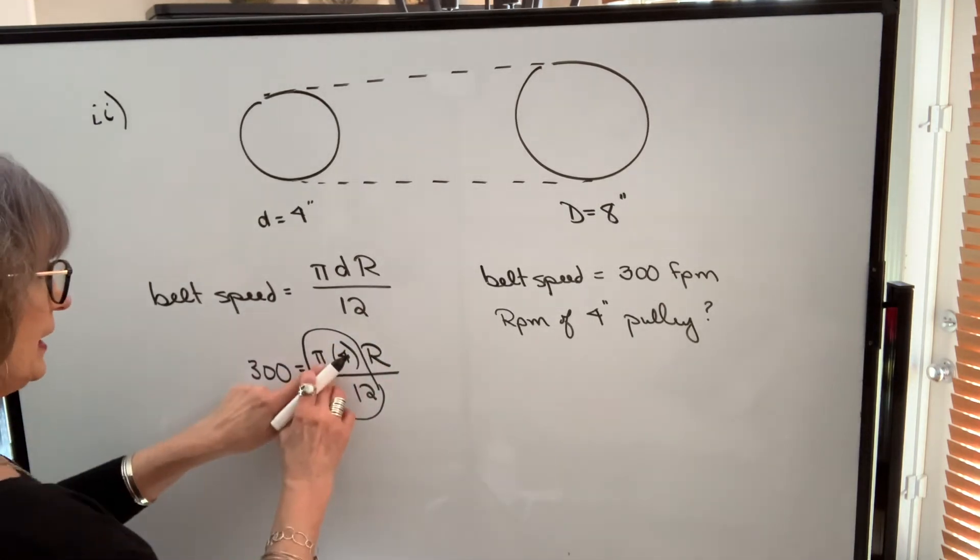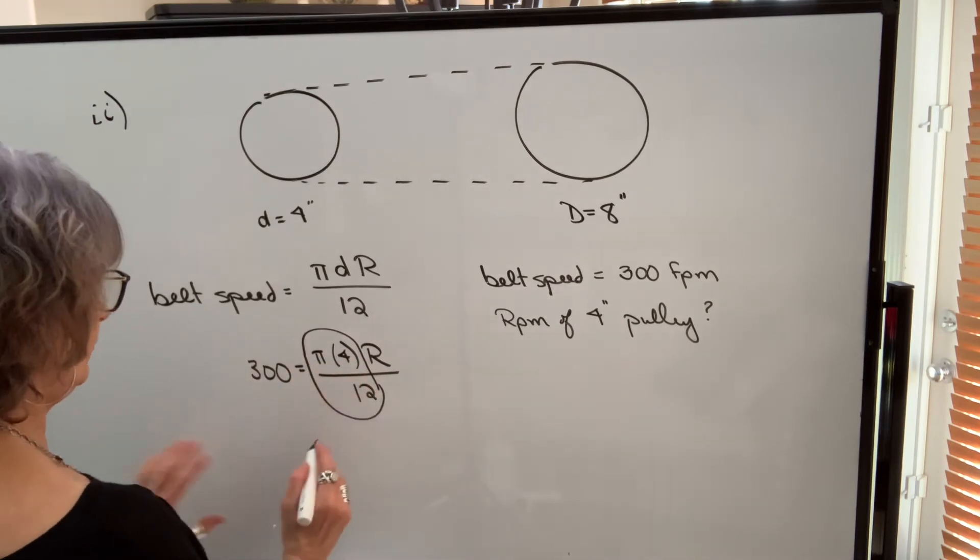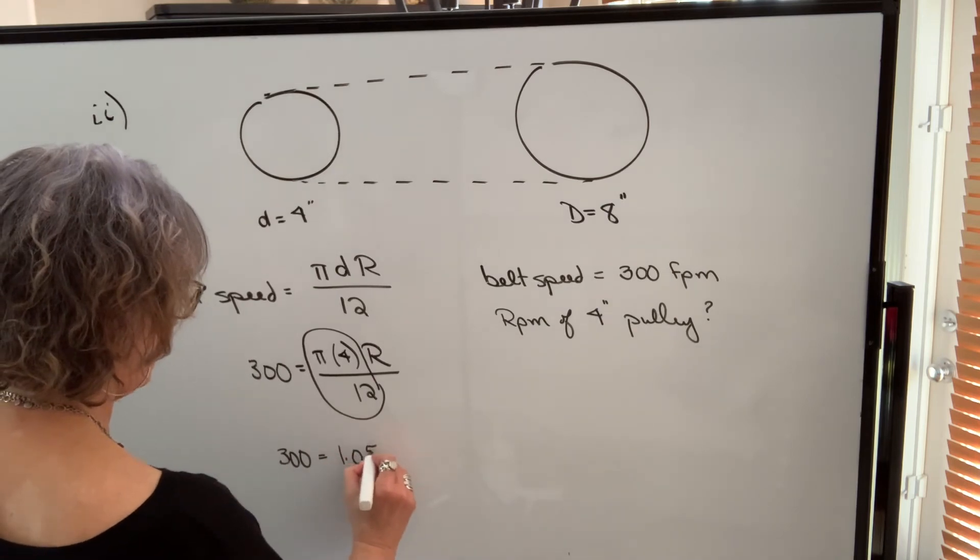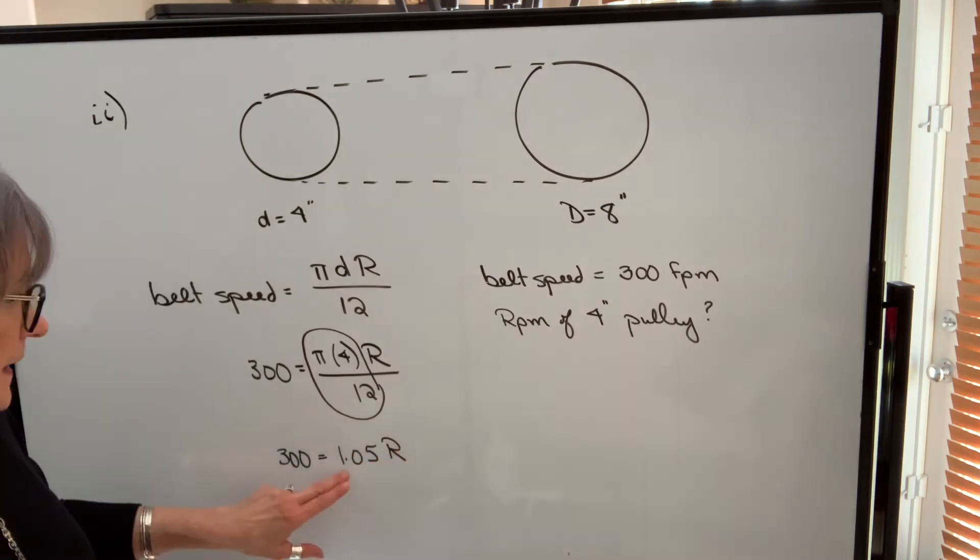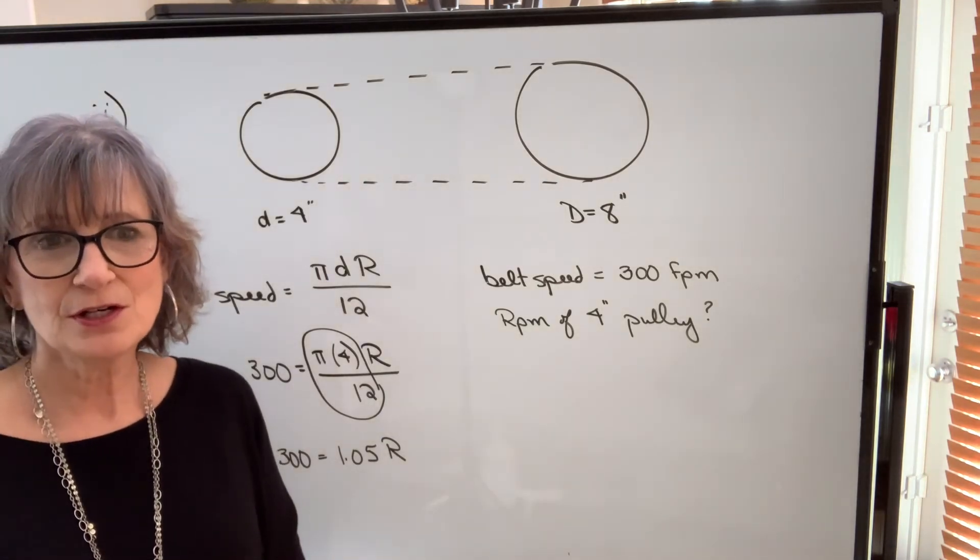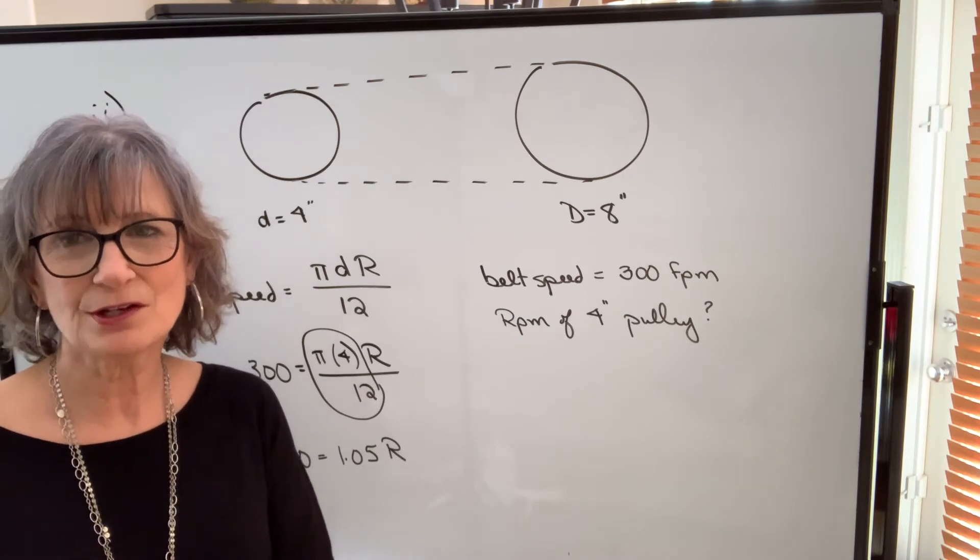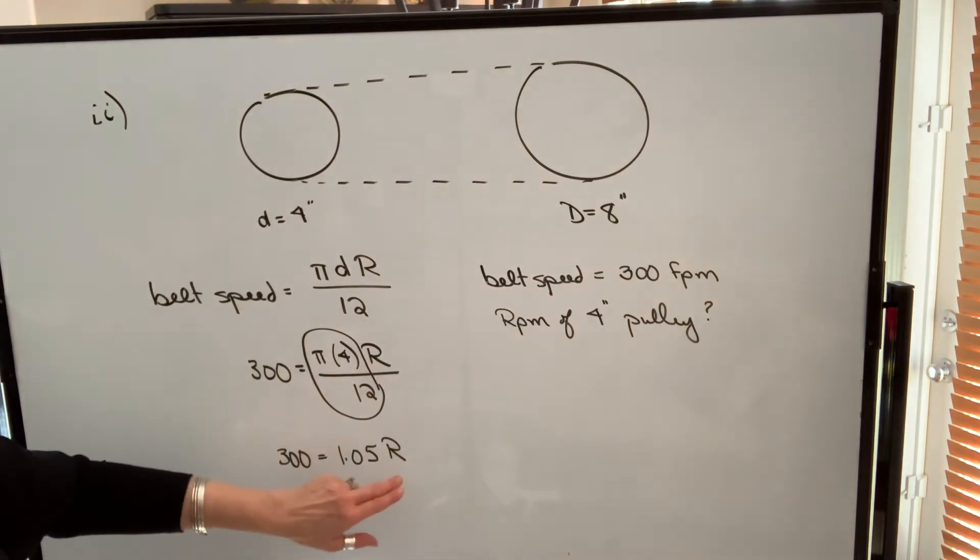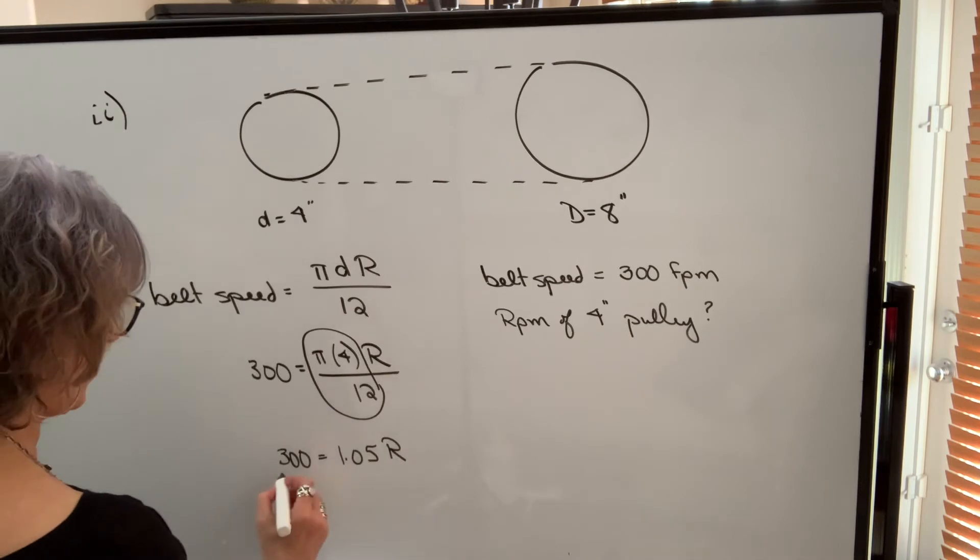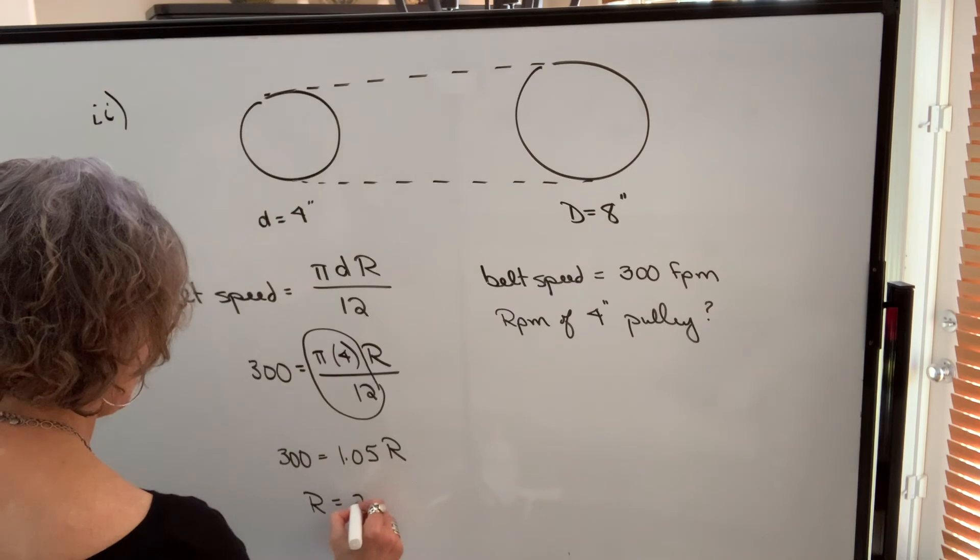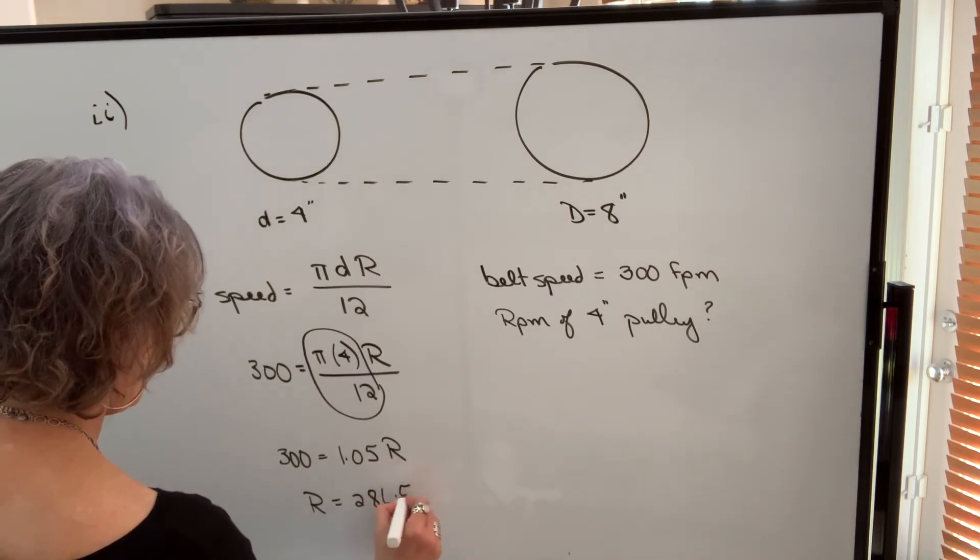The first option is you can combine all of this and get one number. So you can take pi, multiply by 4, divide by 12 and we get 1.05 times R. This number is rounded off. It actually goes to more decimal places on my calculator. So whenever possible, try to use the number that's on your calculator. You might have to store it in the memory function. Now to solve for R, we're going to divide both sides by 1.05 or actually the value on your calculator and we get R equal to 286.5 RPM.